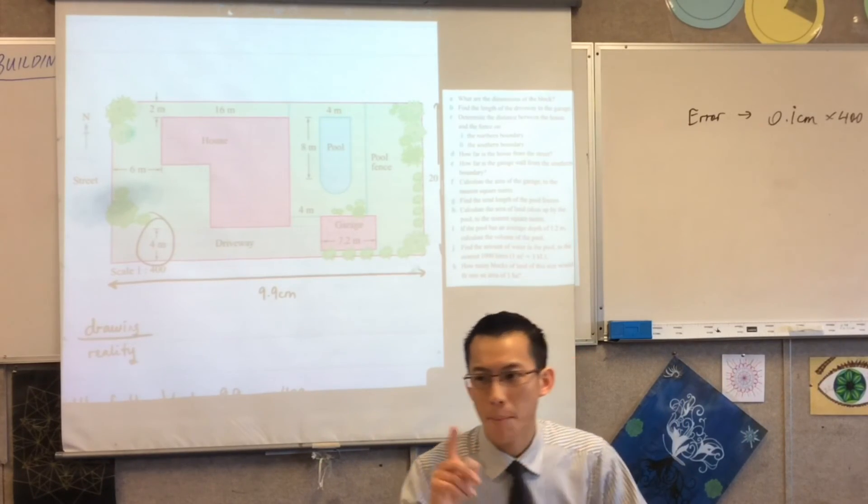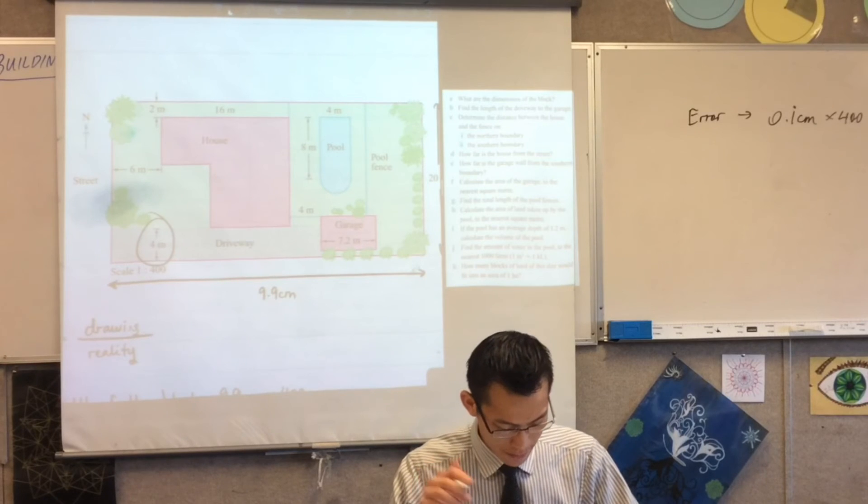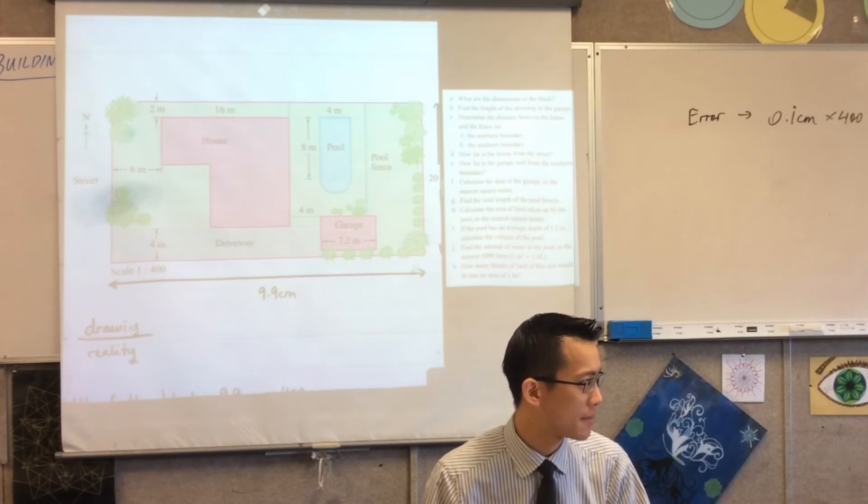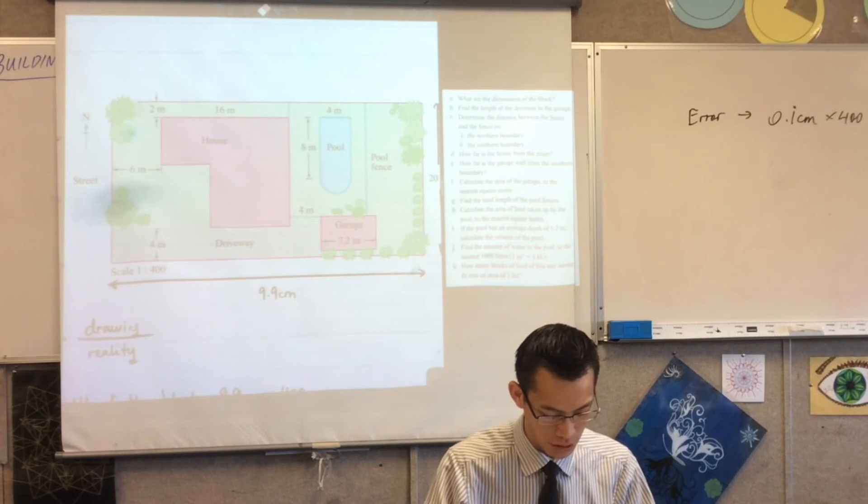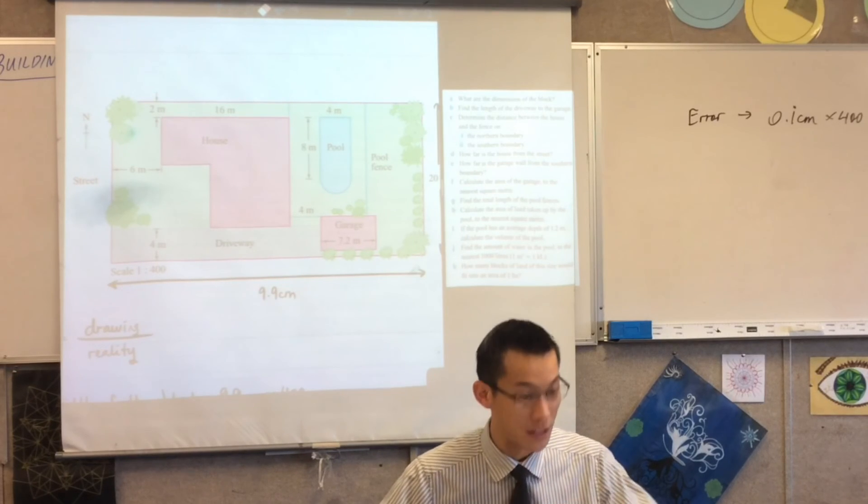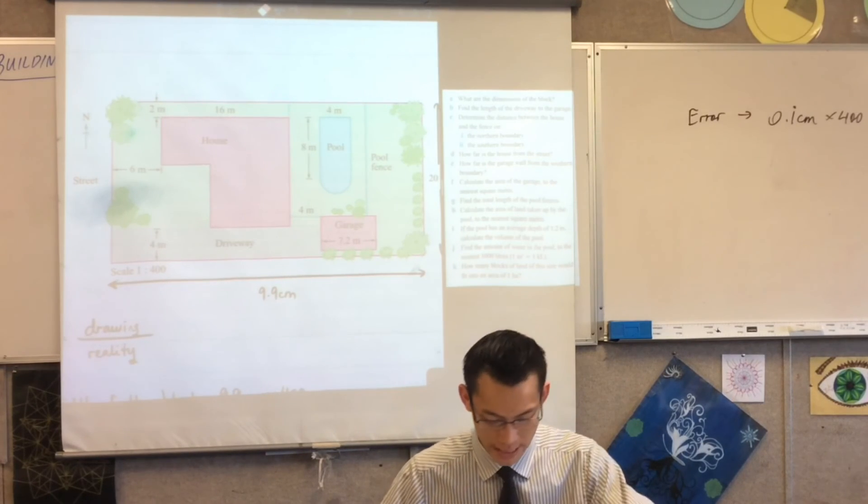Okay, part D is another one you can just read off. How far is the house from the street? It's just six meters.